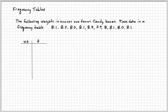Frequency just says how many of these boxes I have. The weights range from 7.9 to 8.3. I put them in order, and then I'll randomly choose one of the candy boxes.